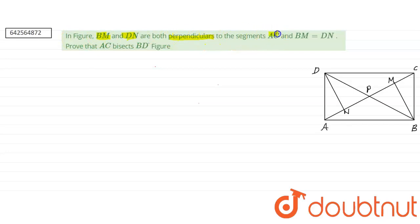Prove that AC bisects BD. So what we have to prove? We have to prove that AC bisects BD. That means this line segment AC is bisecting BD.